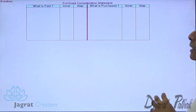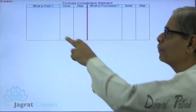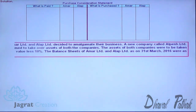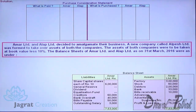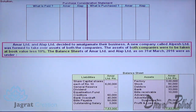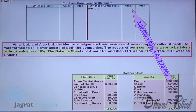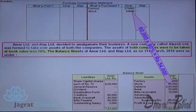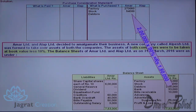Now I am going to write down the details of assets purchased and the details of payment made; the missing item — cash — will be found out in what is paid. Assets were taken at book value less 10%: factory 3,00,000, deduct 10% thereof — so 3,00,000 into 90%. This is the purchase price of factory of Uber Limited. Plant: 60,000 into 90%.